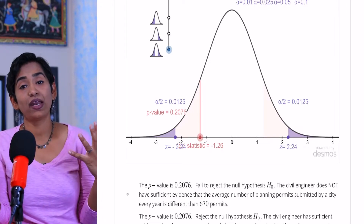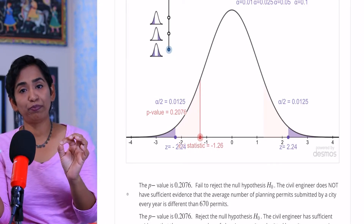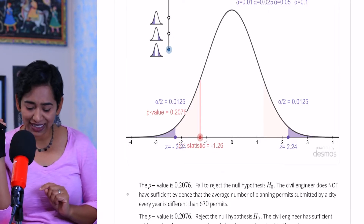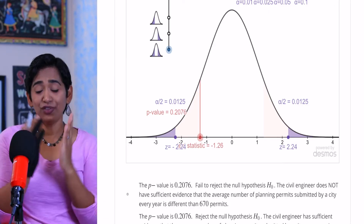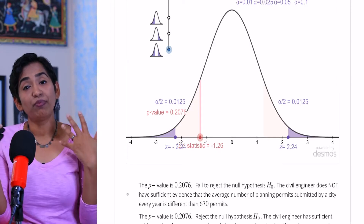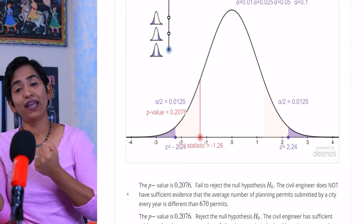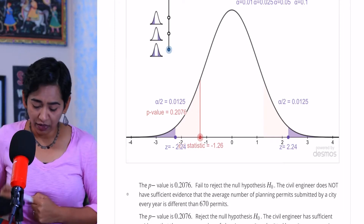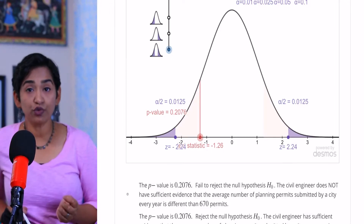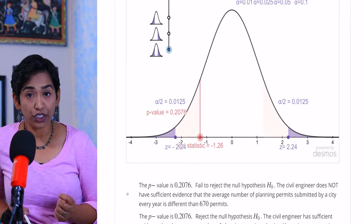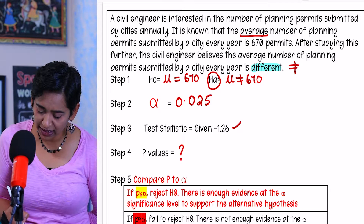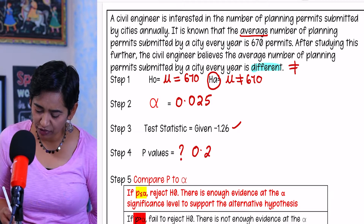If the display does not expand, press Control and the plus button to zoom in. Now I have it set. My test statistic does not fall in the rejection region, but because we are using p-values, I'll go ahead and find my p-value. As you can see, it clearly says in red: my p-value is 0.2076.